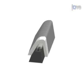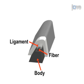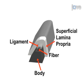Finally, each layer of the vocal fold model is cast, including the body, the ligament with a fiber in the center, the superficial lamina propria, and the epithelium.